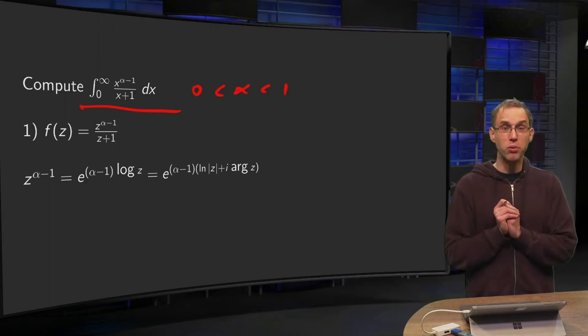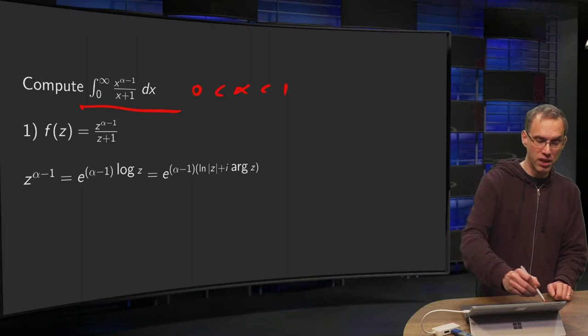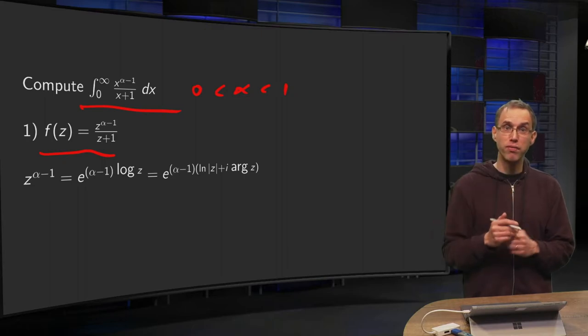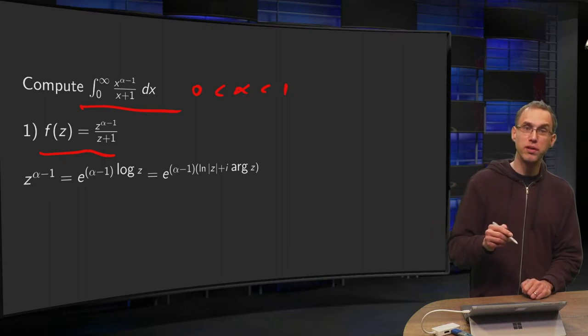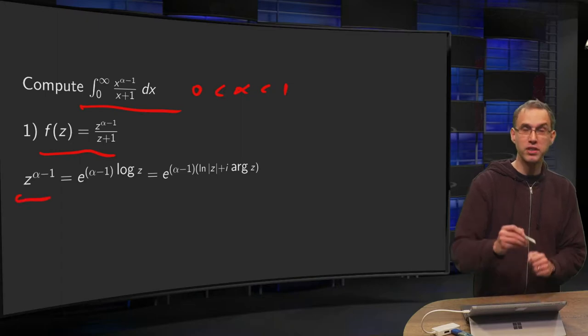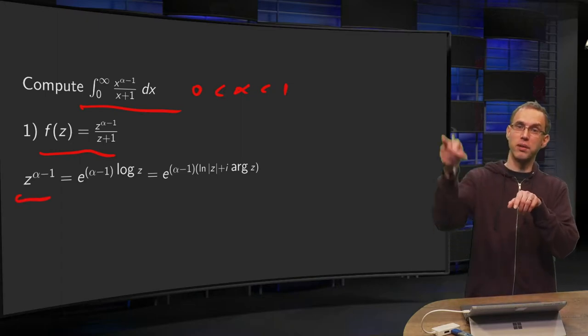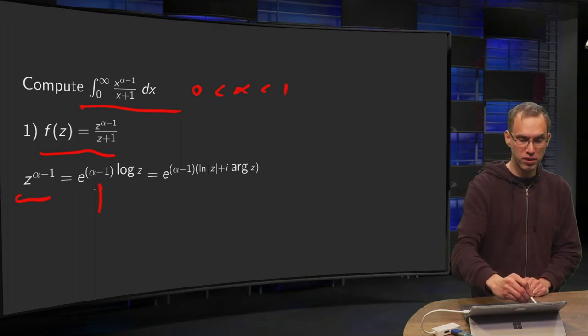So how are we going to do that? We can use complex contour integration. The definition of f is quite obvious here. We have to be a bit careful with the power function, so how are we going to define our power? z to the power alpha minus 1, then you get e to the power log z and put the alpha minus 1 in front.